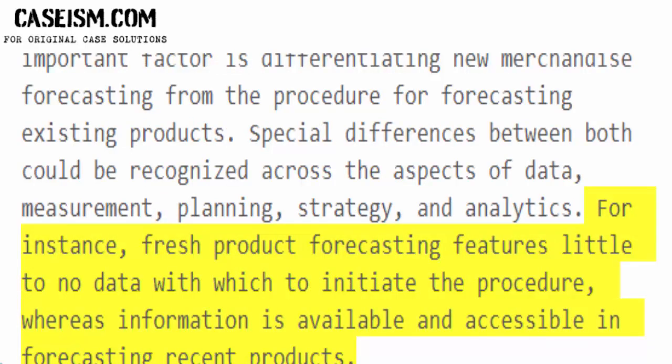For instance, fresh product forecasting features little to no data with which to initiate the procedure, whereas information is available and accessible in forecasting recent products.